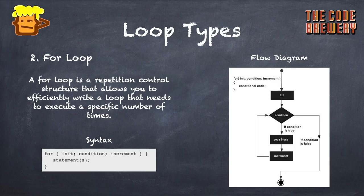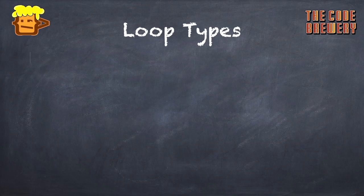The syntax for the for loop is: for (initialization; condition; increment/decrement) { block of code }. The increment or decrement will eventually make the condition false. From the flow diagram, if the condition is true it will execute the block; otherwise it won't.